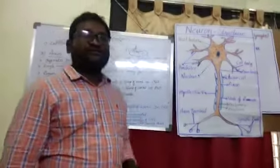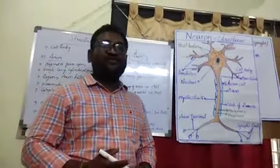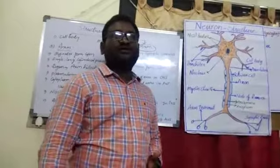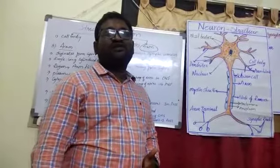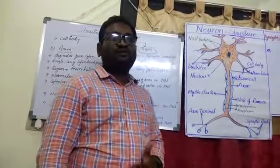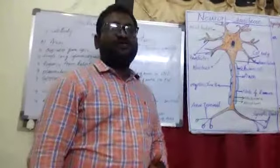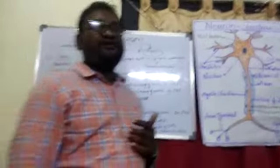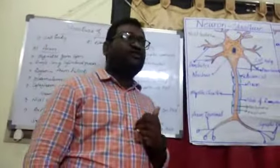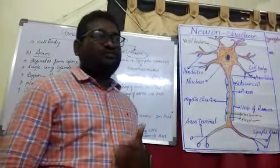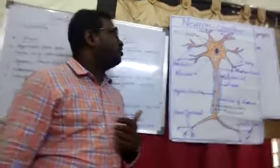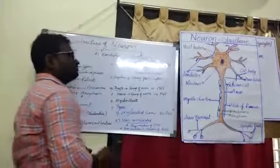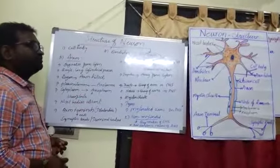Hello students, this is the continuation to the topic that is structure of neuron. In the previous video we discussed about the parts, that is cell body and dendrites. In this video we will discuss about the remaining part, that is about axon — the last part.